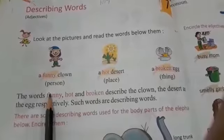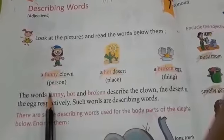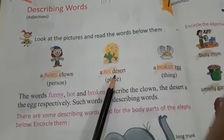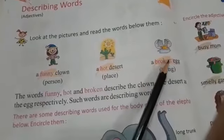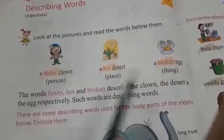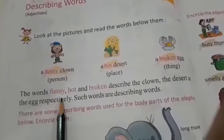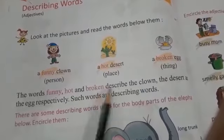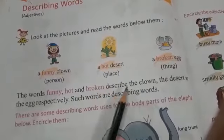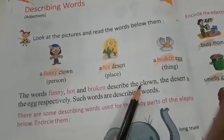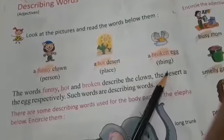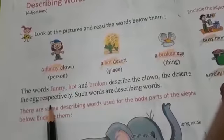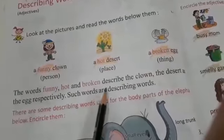A funny clown. A hot desert. A broken egg. The words funny, hot, and broken describe the clown, the desert, and the egg respectively. Such words are describing words.